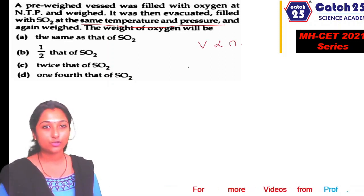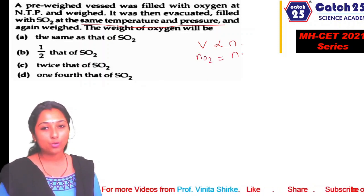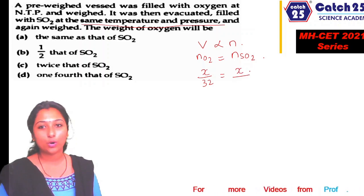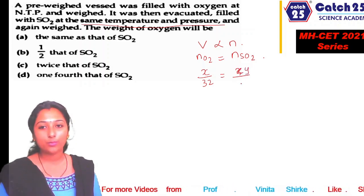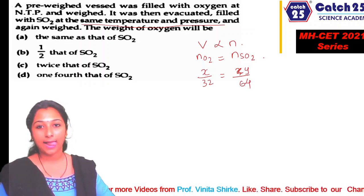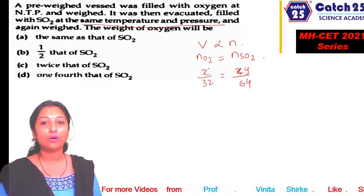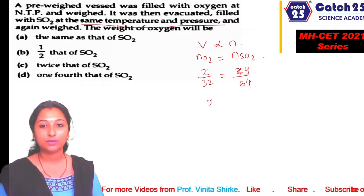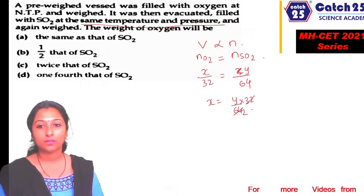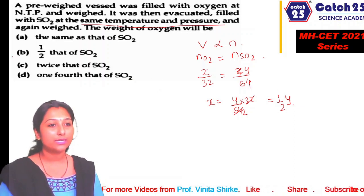By Avogadro's law, volume is directly proportional to moles at constant T and P. Since the volume (vessel) is the same, moles of O2 = moles of SO2. Let moles = n: mass of O2 = n × 32 and mass of SO2 = n × 64. Therefore, mass of O2 = half the mass of SO2.